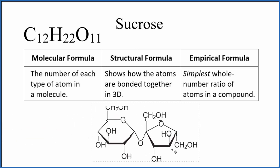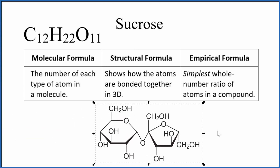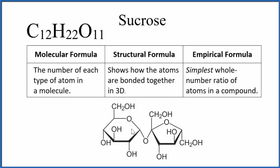The structural formula gives us a general kind of 3D idea of how the atoms are connected together. So we still have 12 carbons, 22 hydrogens, and 11 oxygens — they're just depicted here in this diagram. Not all the carbons and hydrogens are shown here; we have carbons where these are joining together, and there are some hydrogens as well that aren't shown.